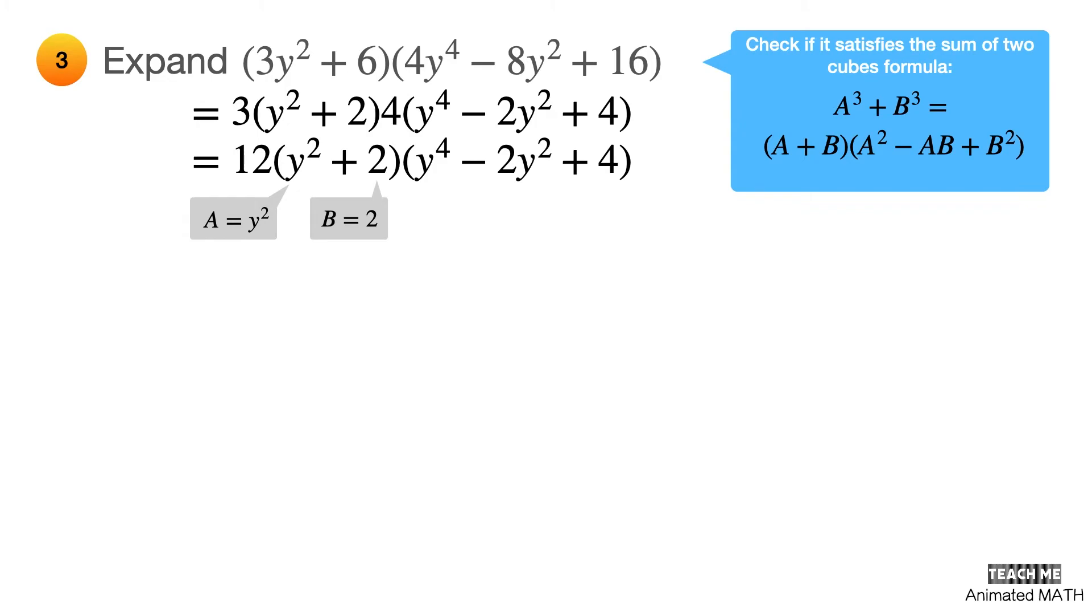Using these values for computation, a squared is equal to y raised to 4, ab is equal to 2y squared, and b squared is equal to 4. And now, the expression follows the sum of two cubes formula. Cool trick! Right?